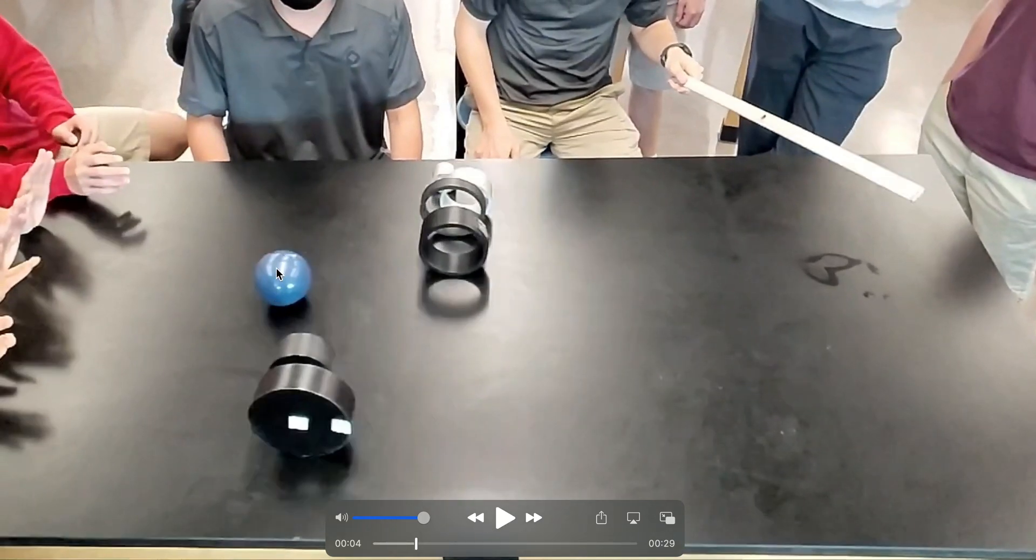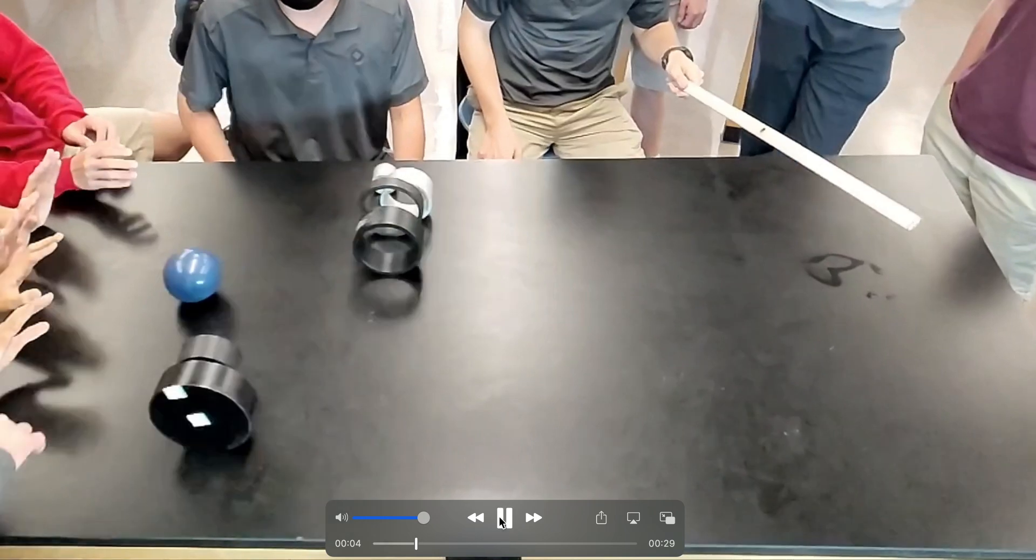What you notice is that the sphere takes first place. The two discs tie for second, even though they have different radiuses and masses. And then the four rings tie for third place, despite the fact that they have different radiuses and masses.